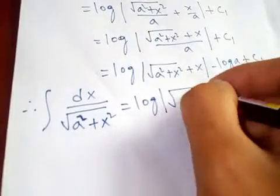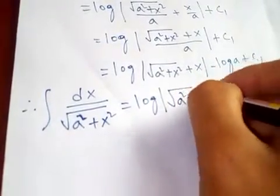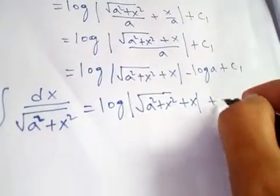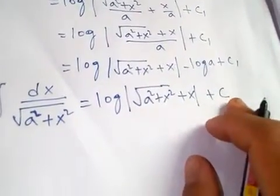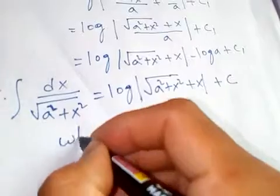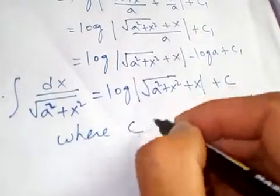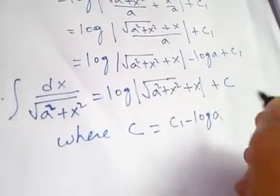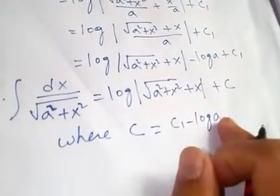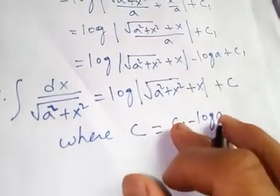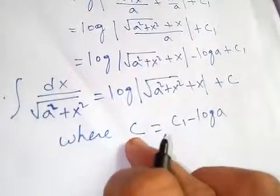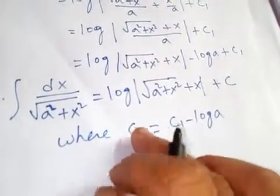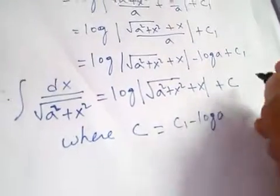So our final answer is: the integral of dx over square root of a squared plus x squared equals log of square root of a squared plus x squared plus x, plus C. Here C equals C1 minus log a, because a is a constant, and subtracting two constants gives another constant, which we represent by capital C. And this is our final answer.